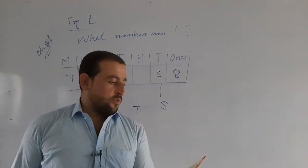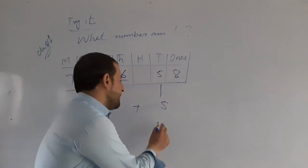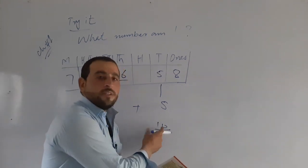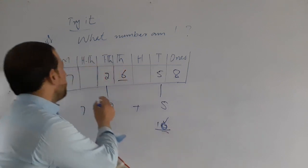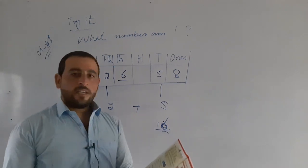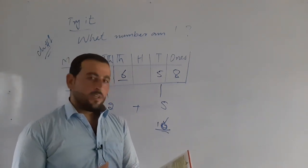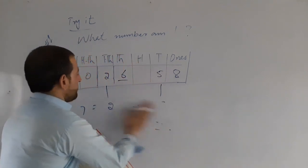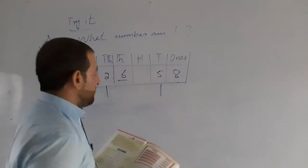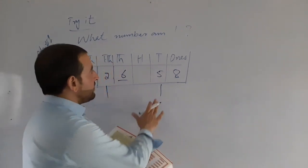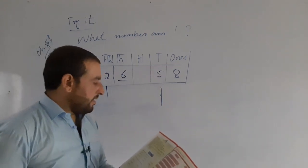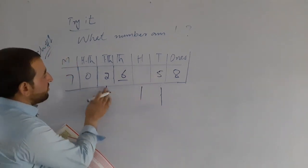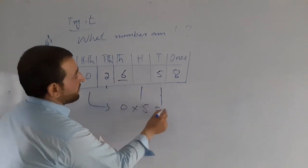My 10,000 place digit is the smallest 2-digit number, which is 10. So the 100,000 place digit gives us 2-digit numbers: 1, then 0. My 100s place digit is the product of my 10s place digit — so 0 times 5 is 0.